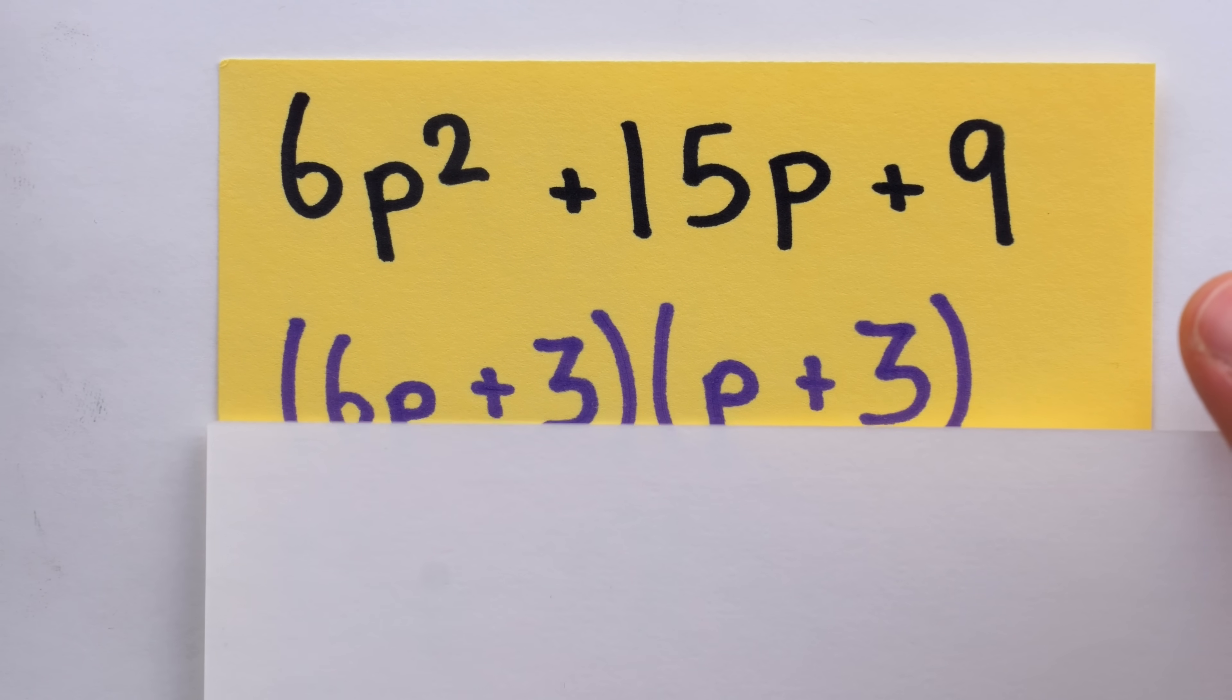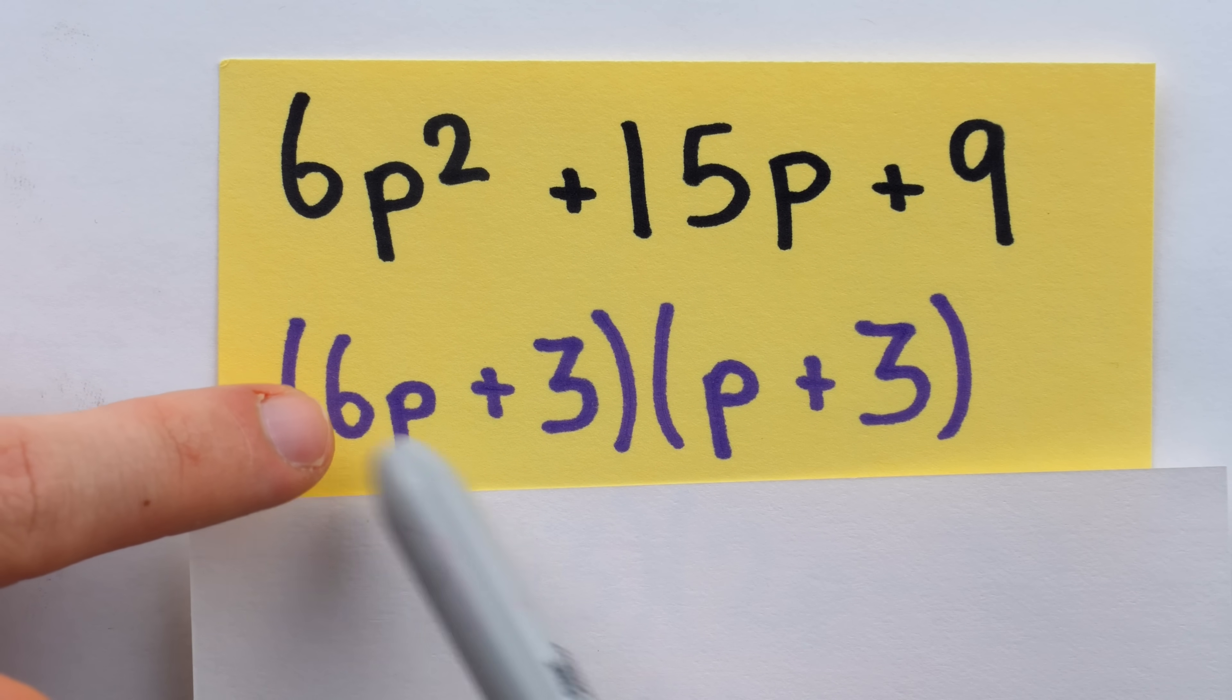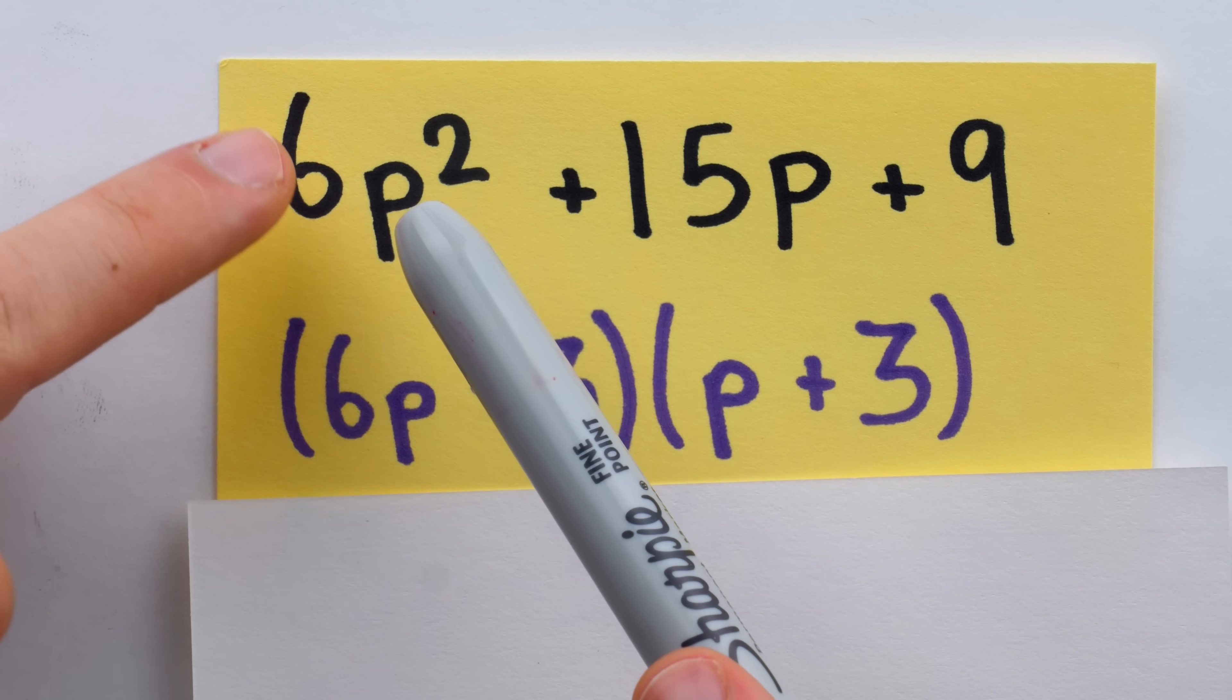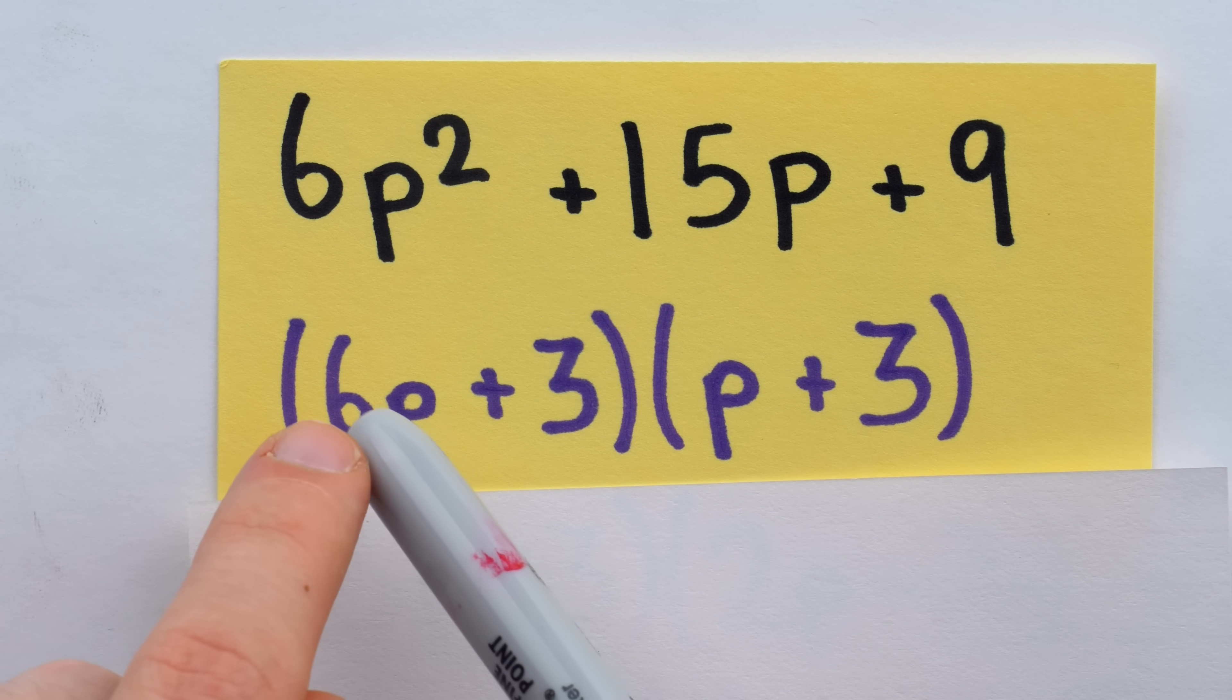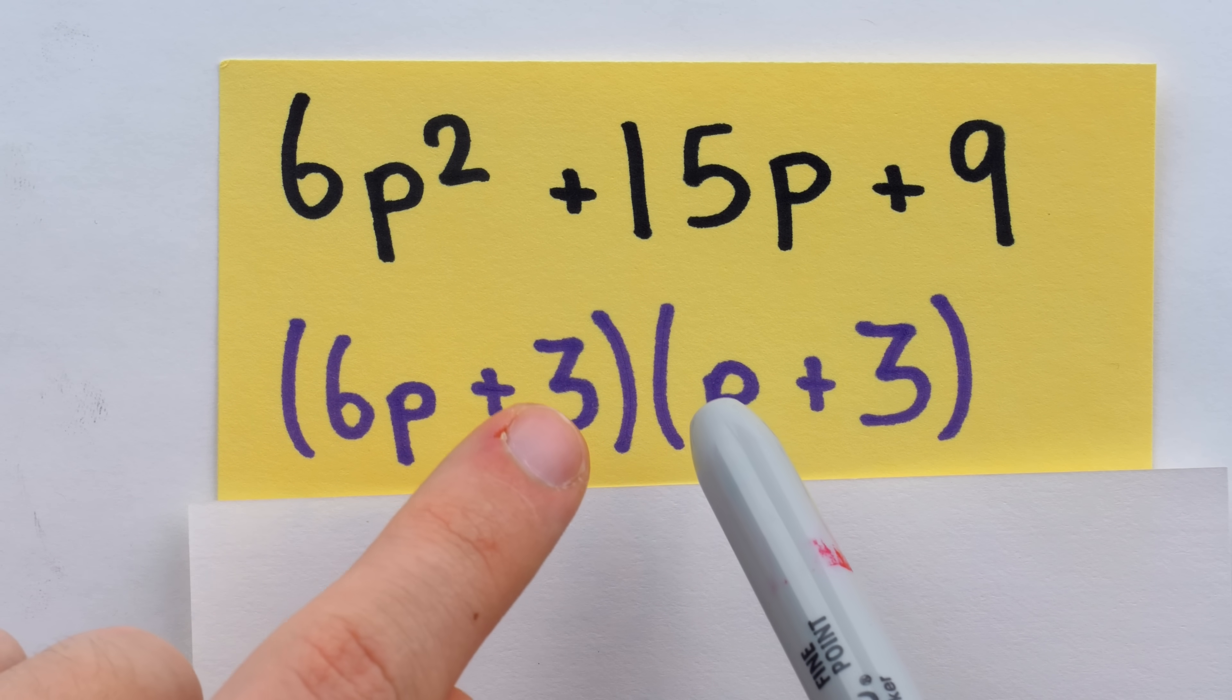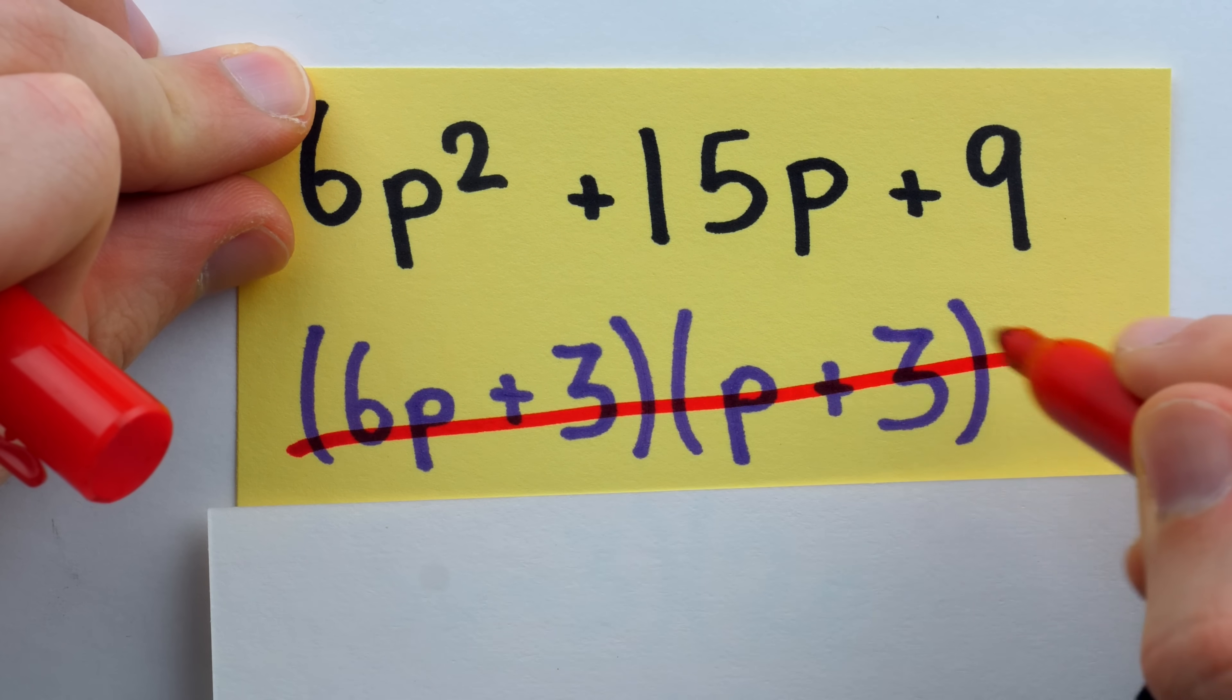For example, I might try factoring this into 6p plus 3 times p plus 3. 6p times p will give me that 6p squared, but if I check the rest of the details here, it's not going to work out. 6p times 3 is 18p, plus another 3p, that's 21p. That does not work. Alright, so no dice there.